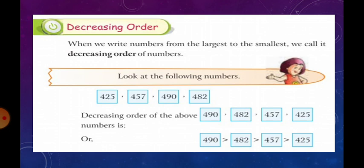So, the numbers are 425, 457, 490 and 482. Now, in decreasing order, we arrange the numbers 490, 482, 457 and 425.